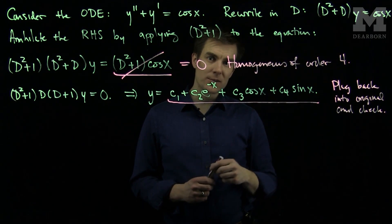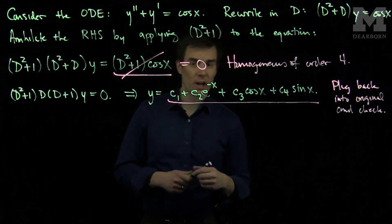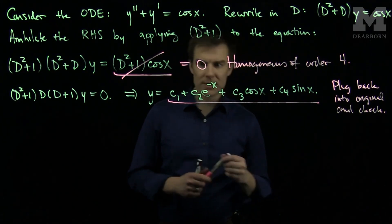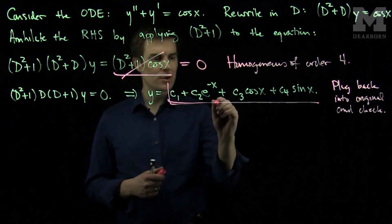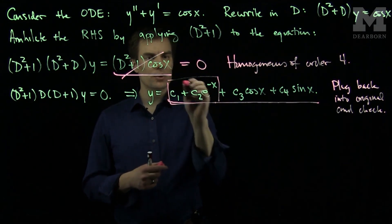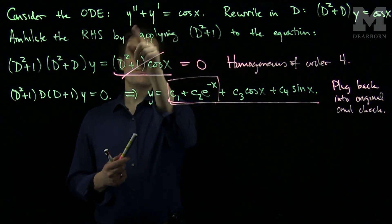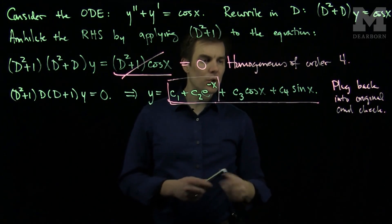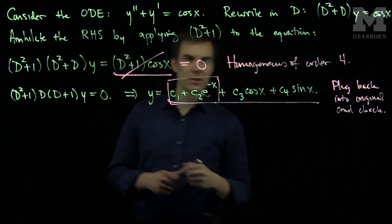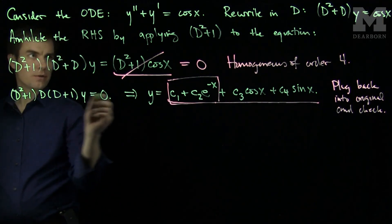Two of these constants will be determined by plugging back in and checking. If we focus on the first two terms, plugging those first two terms back into the original equation shows they will be annihilated by the left hand side. So all we need to plug in are the c₃cos(x) and c₄sin(x) terms.